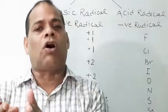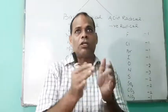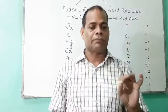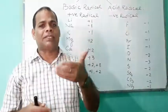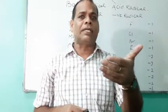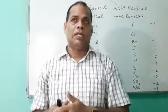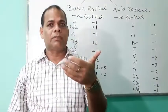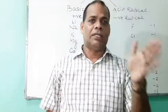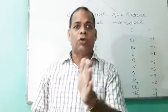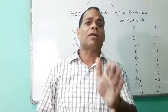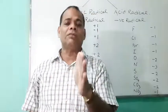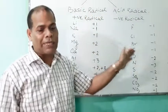When the basic radical and acid radical combine to form a compound, the name of the positive radical remains the same, but the name of the negative radical changes slightly. For example, calcium oxide — the positive radical remains calcium, but oxygen becomes oxide. Sodium chloride — sodium remains sodium, but chlorine becomes chloride. Aluminium nitride — aluminium remains aluminium, but nitrogen becomes nitride.